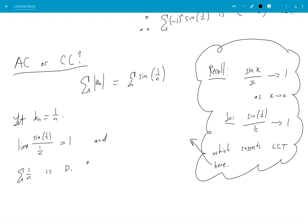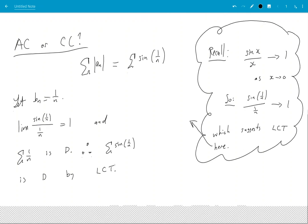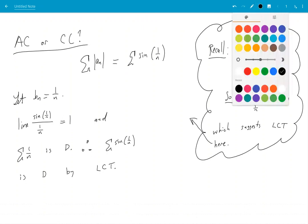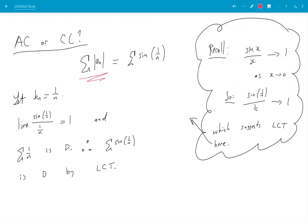Therefore summation sin(1/n) is divergent by limit comparison test. Okay that's tricky, so the series of absolute values, this guy turns out to be divergent.